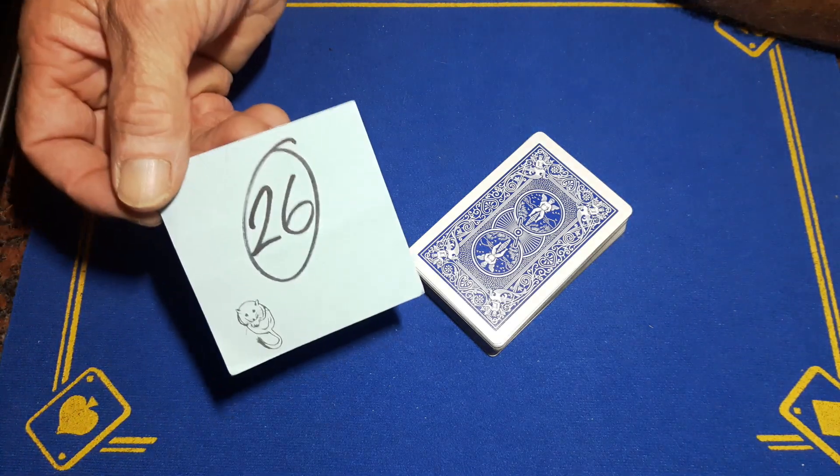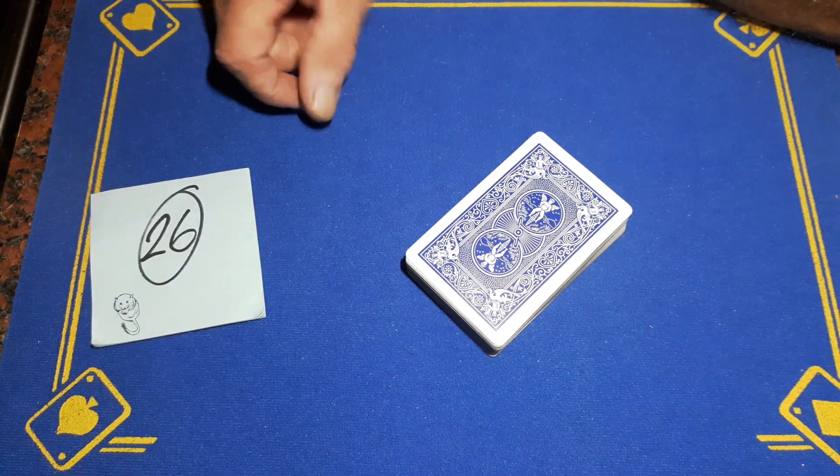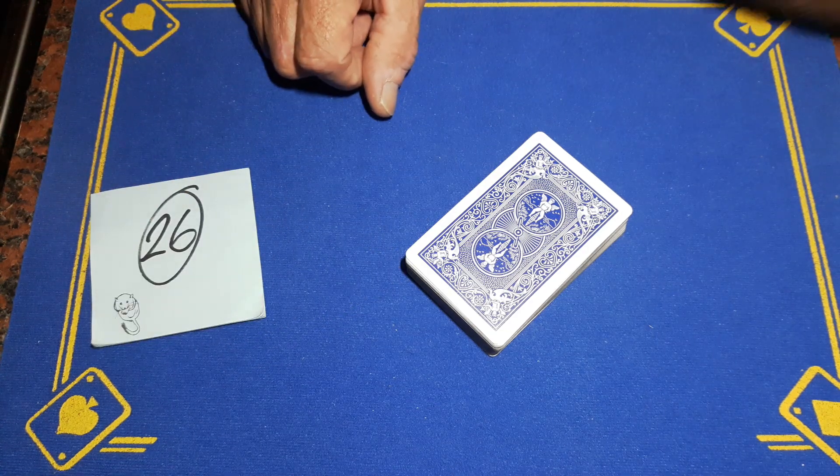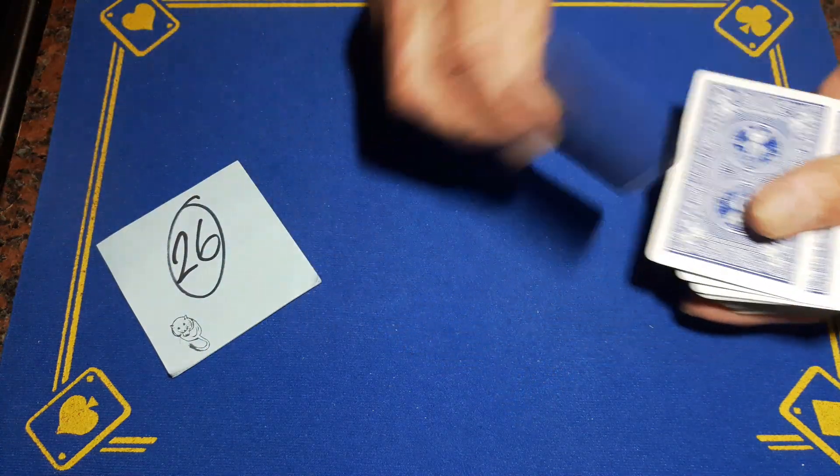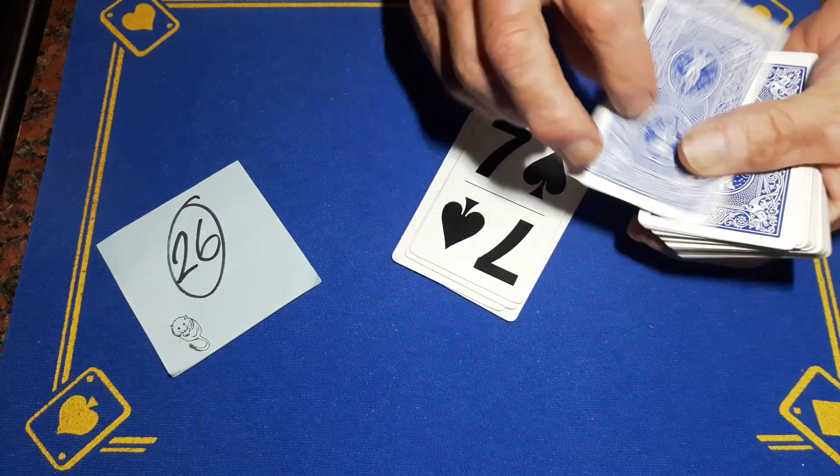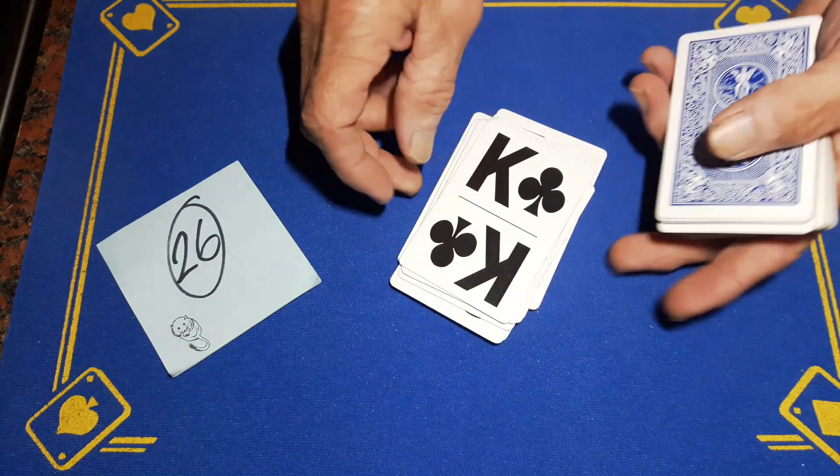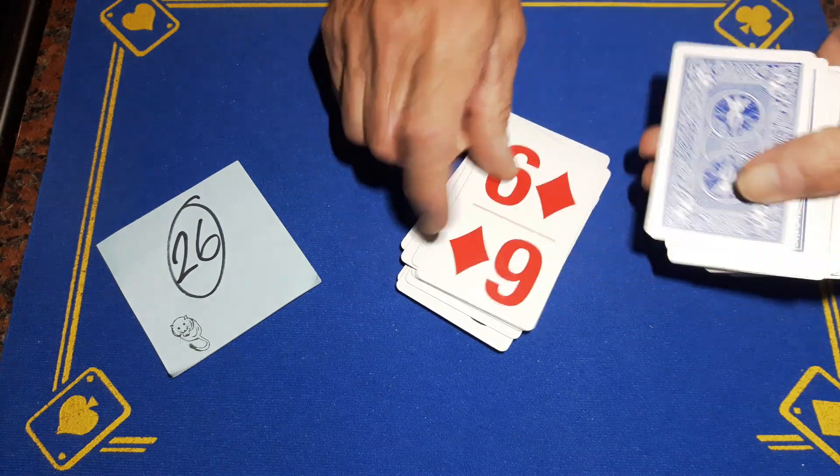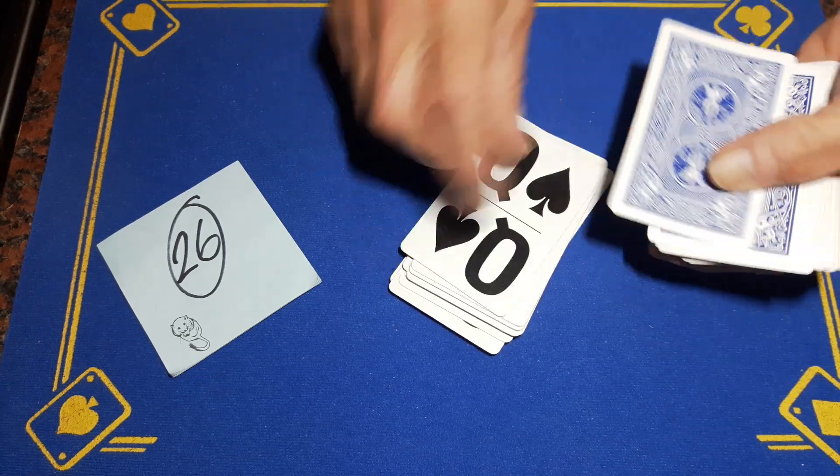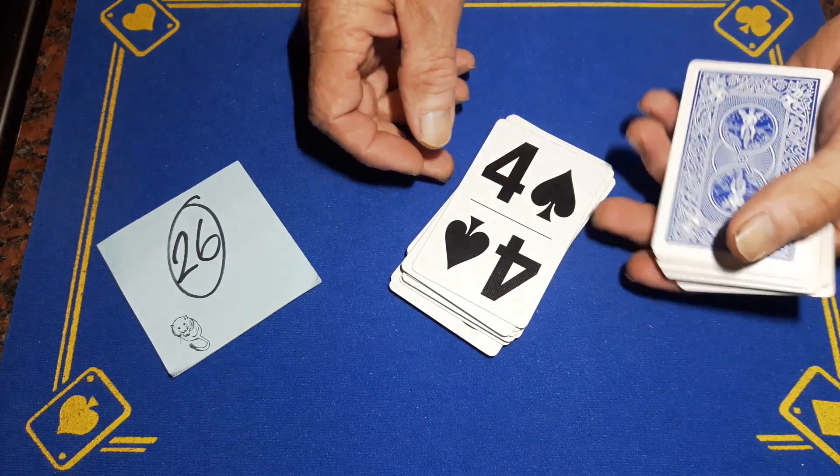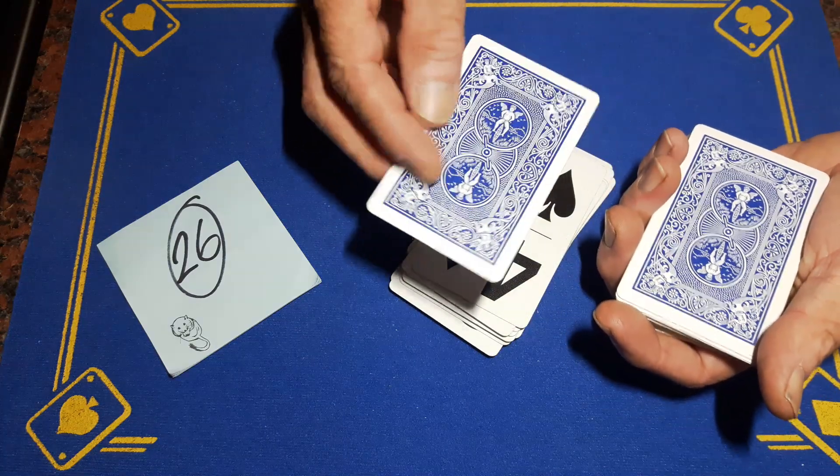And I wrote down the number 26. I want you to deal the cards face up onto the table and just see what happens when you get to the 26th card. 26, ten of spades. One, two, three, four, five, six, seven, eight, nine, ten, eleven, twelve, thirteen, fourteen, fifteen, sixteen, seventeen, eighteen, nineteen, twenty, twenty-one, twenty-two, twenty-three, twenty-four, twenty-five. This is the 26th card. If in fact this is the ten of spades.